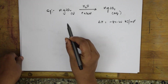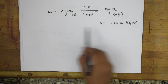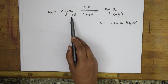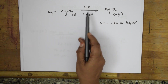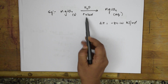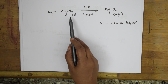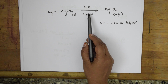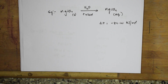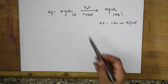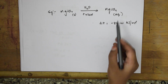Now let us write the definition. It is basically enthalpy change — delta H — the change in enthalpy when one mole of a solute is dissolved in a large quantity of water, meaning an infinite quantity of water or excess solvent. When you are dissolving a particular solid in a large quantity of water — meaning you are diluting it — you will finally get an aqueous solution. This is called heat of solution.